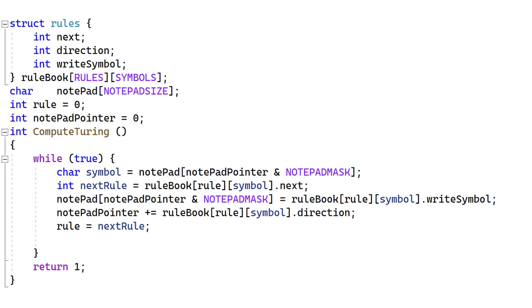The inner loop for the algorithm was pretty straightforward. We'd read a symbol from the notepad. We'd then use that with our current rule to look up the next rule. We'd write a new symbol over the symbol that was already there on the notepad.